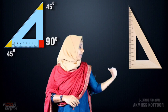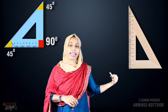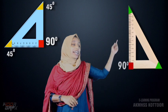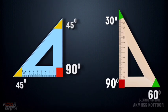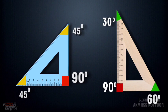We have two types of set square in our geometry box. The first one has a right angle of 90 degrees, and the other two angles are 45 degrees each. The second set square has a right angle of 90 degrees, the smallest angle of 30 degrees, and the other one 60 degrees.